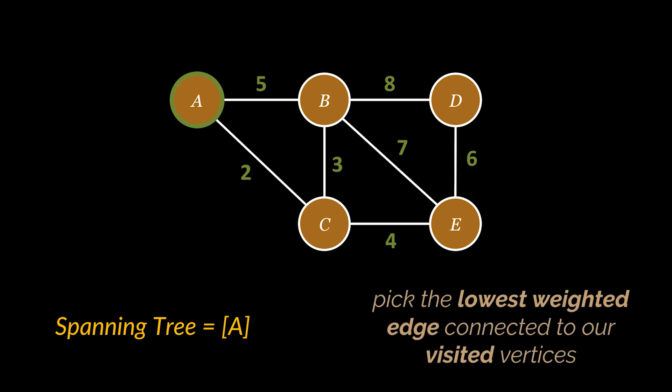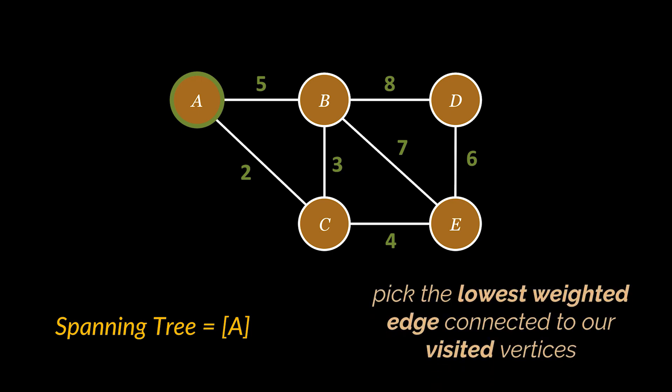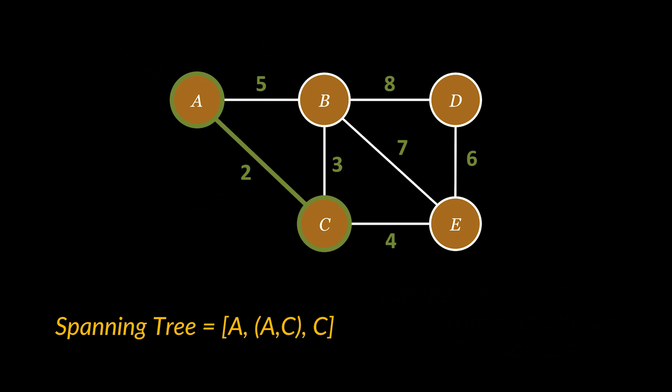So given our visited vertices, we are going to pick the lowest weighted edge connected to them. In our case, we only have a single visited vertex, A, and it is connected with the help of two edges to B and C, weighted 5 and 2 respectively. So we are going to pick the edge of weight 2 connecting A and C as it is the smallest and set both the weight and the vertex to visited.